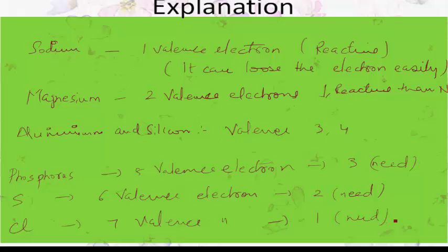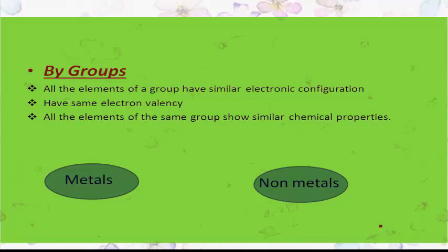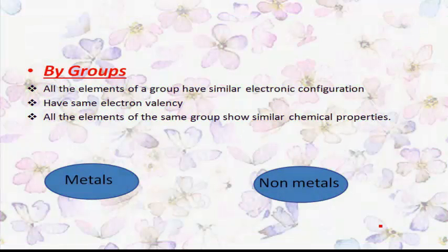Now let's understand how chemical reactivity behaves in a group. All elements of a group have a similar electronic configuration because they have the same electron valency, and all elements of the same group show similar chemical properties. So how do elements have variation in chemical reactivity? The discussion is divided into two parts: metals and non-metals.